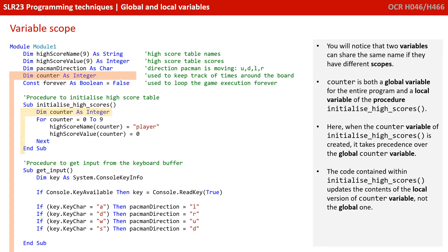You will notice that two variables can share the same name if they have different scopes. Counter is both a global variable for the entire programme and a local variable of the procedure initialised high scores. When the counter variable of initialised high scores is created, it takes precedence over the global counter variable. The code contained within initialised high scores updates the contents of the local version of the counter variable and not the global one.